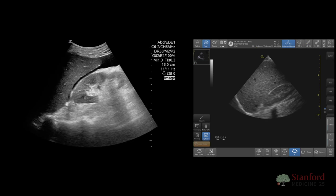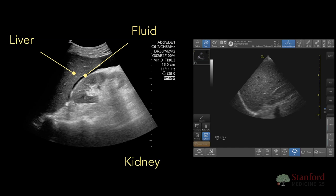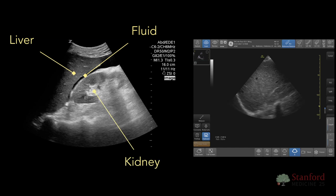In this video, we see fluid, which shows up as black, between the liver and kidney. This might be one of the first areas that ascites can accumulate in patients.